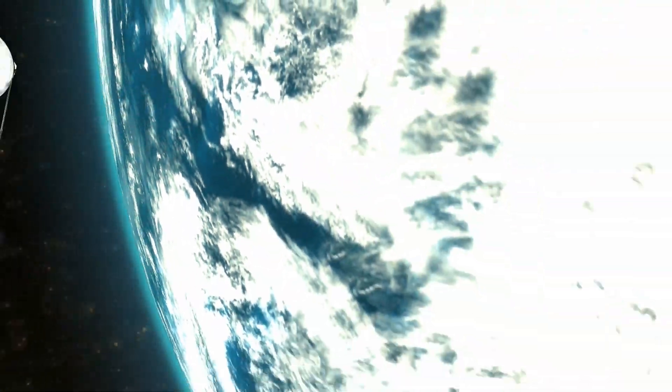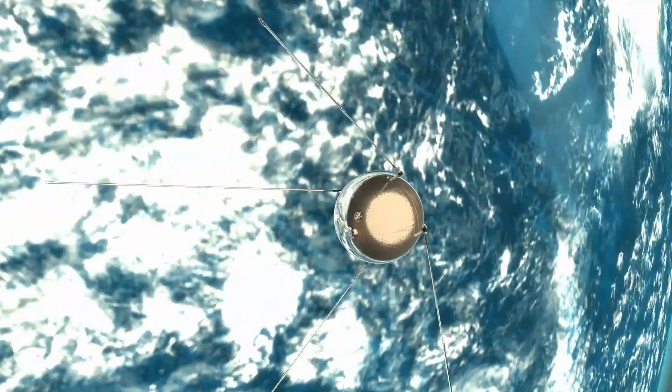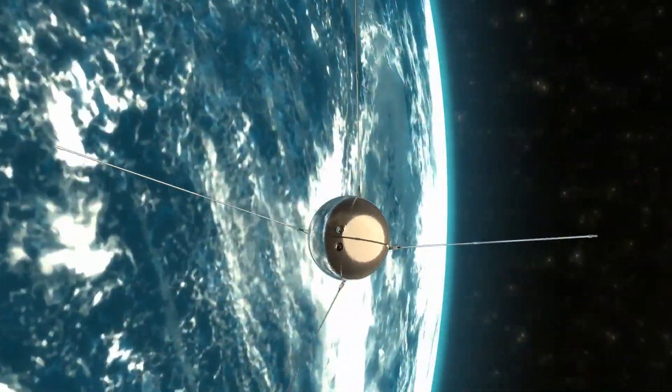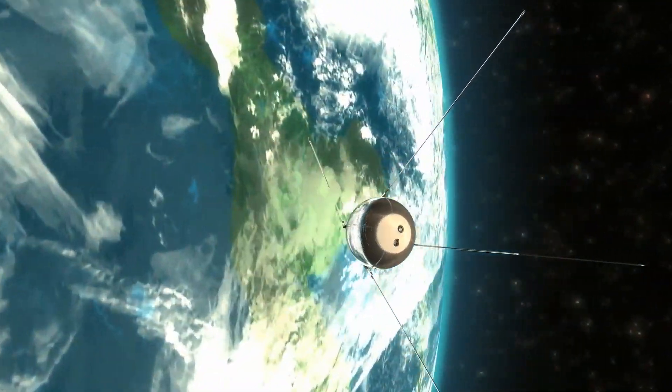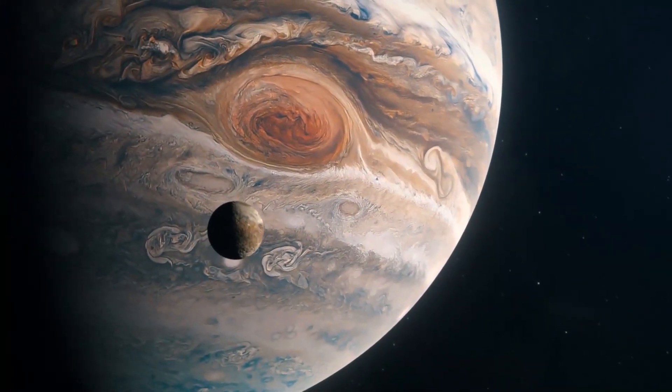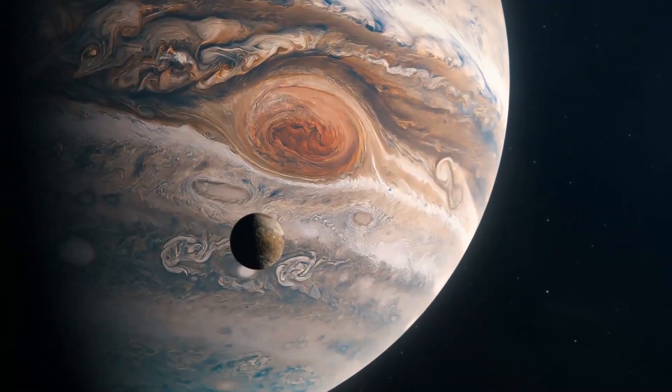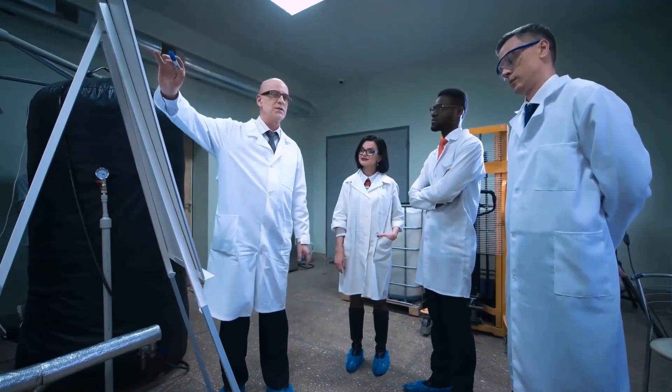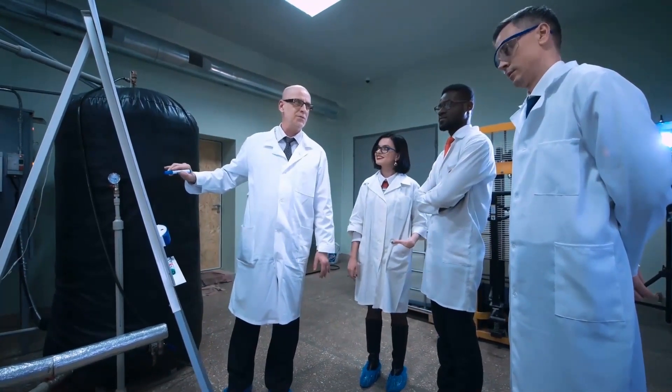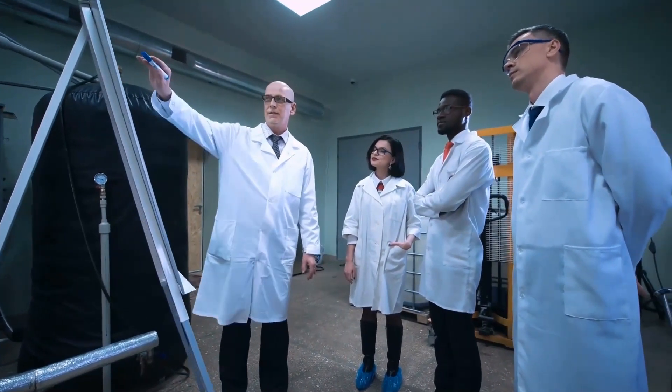While Voyager 2 was launched first, on August 20, 1977, Voyager 1 was launched on September 5, 1977, on a faster and shorter trajectory. Originally, the Voyager space probes were to conduct close-up studies of Jupiter and Saturn and their larger moons. As this mission was a real success, and as the probes were in good condition, scientists decided to go and explore Uranus and Neptune.